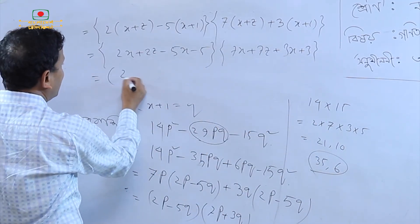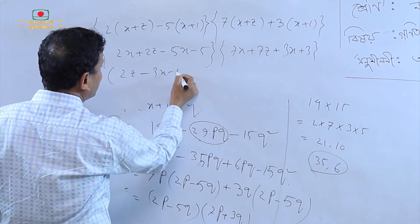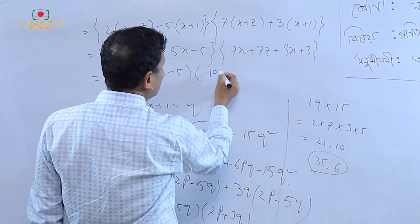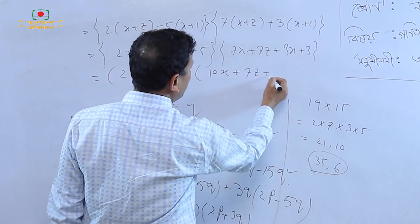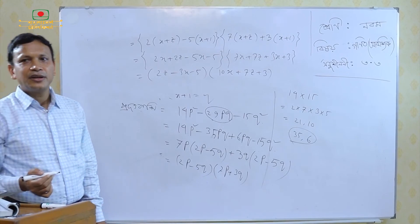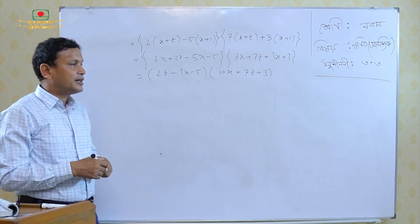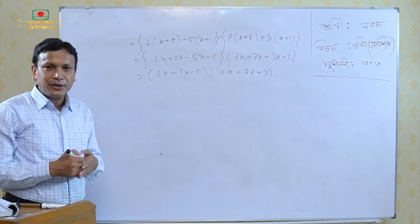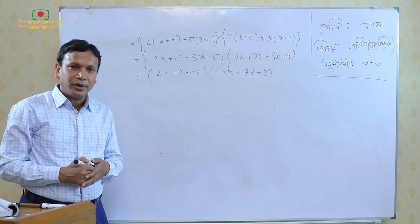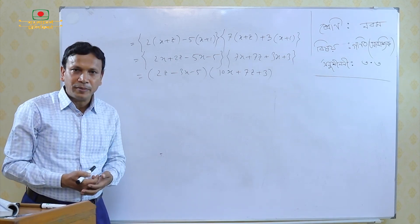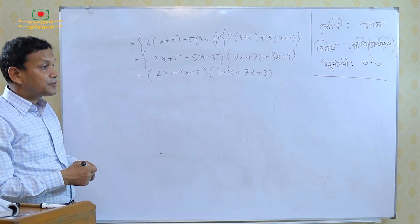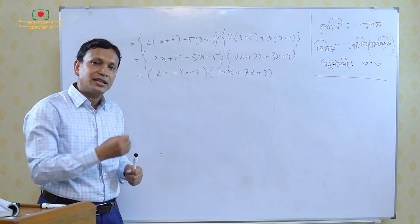This is how we solve these problems. We have covered how to do a squared minus b squared, using a plus b times a minus b, and related factorization identities.